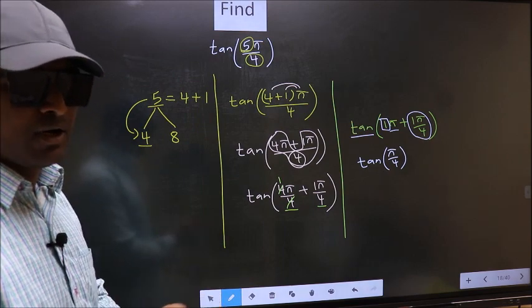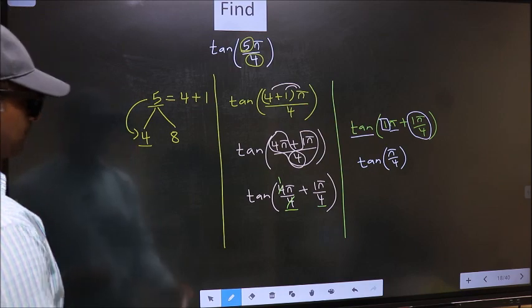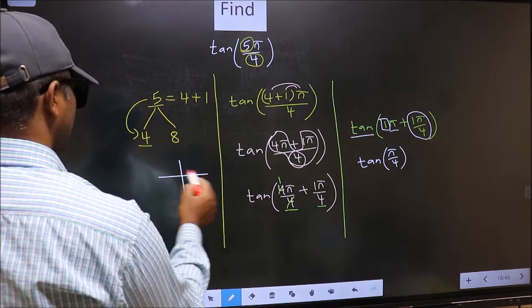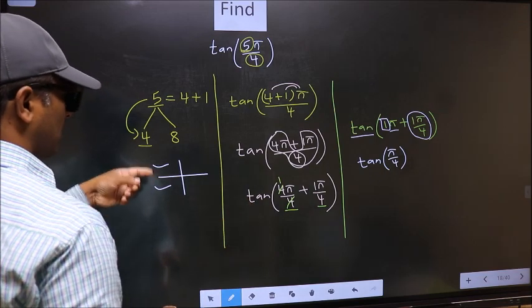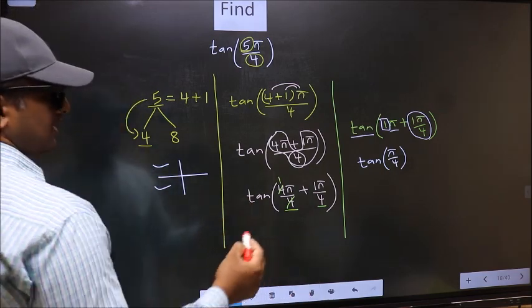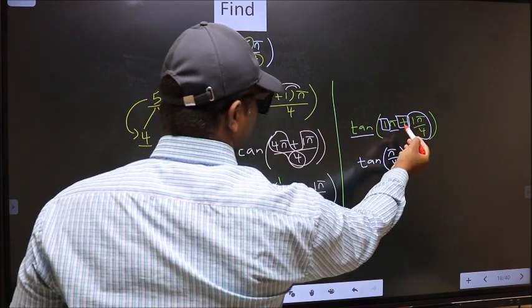All odd multiples of π lie in either the second or third quadrant. To select the quadrant, we should look at this symbol. Here we have plus.